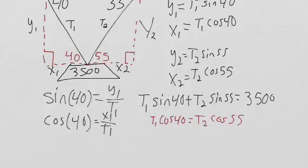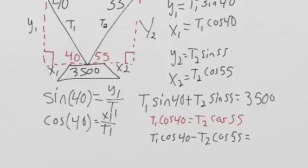So then we subtract it over. We get T1 cosine 40 minus T2 cosine 55, that's going to be equal to zero.